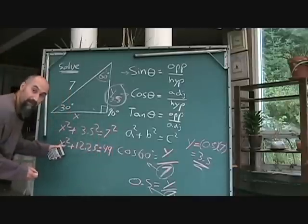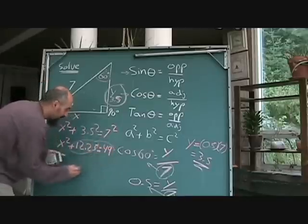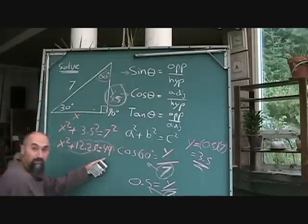So you got x squared plus 12.25 is equal to 7 squared is 49. Now you've got to get x by itself, right? So you're going to grab this guy, bring it over. It was a plus here. Comes a minus here.